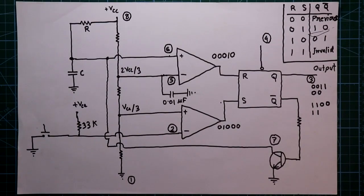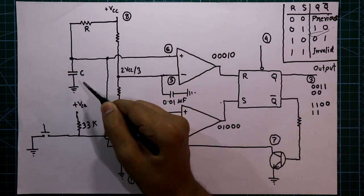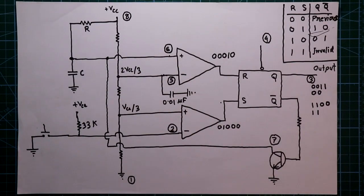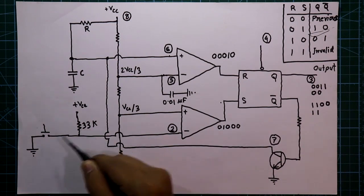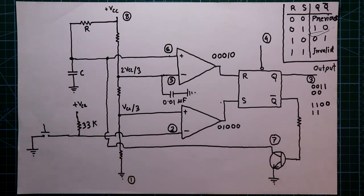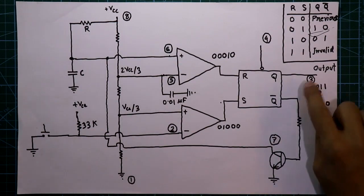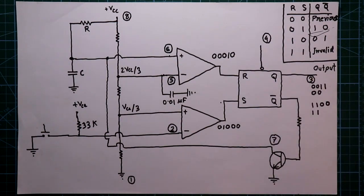For this we have to connect the resistor and the capacitor with the IC, and also the pull-up resistor and the push-to-on switch. With the output we are going to connect an LED.